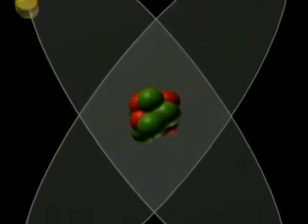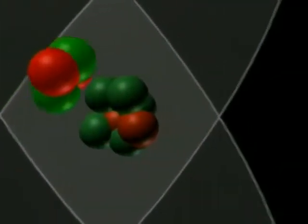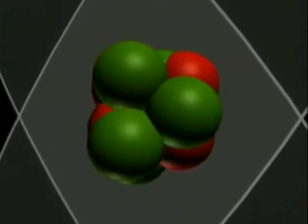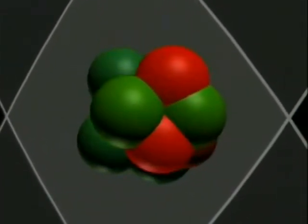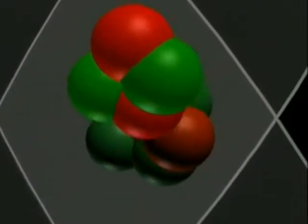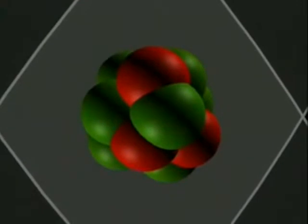When a radioactive atom emits alpha radiation, it loses an alpha particle from its nucleus. Each alpha particle is made of two protons and two neutrons. Alpha radiation consists of positively charged particles.